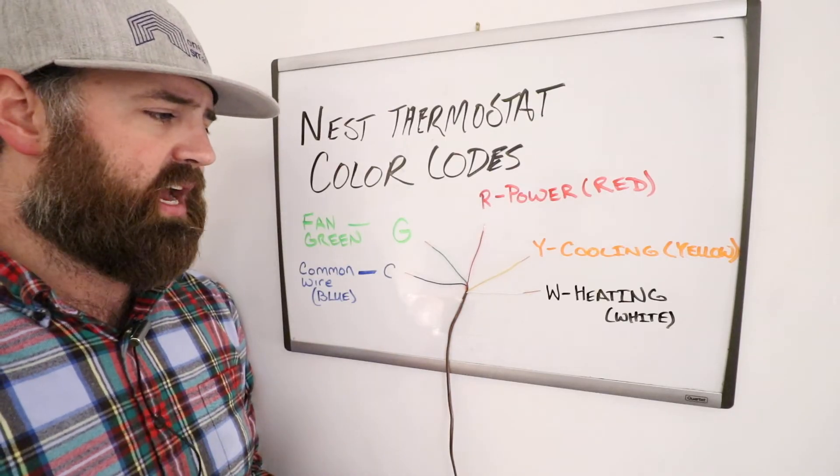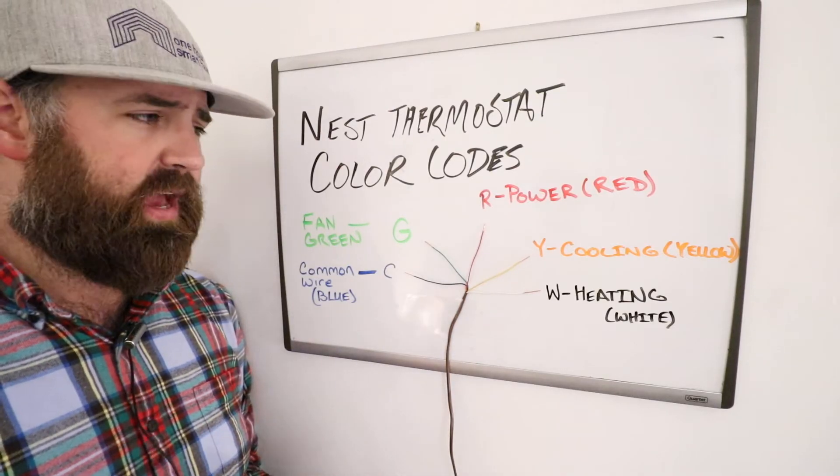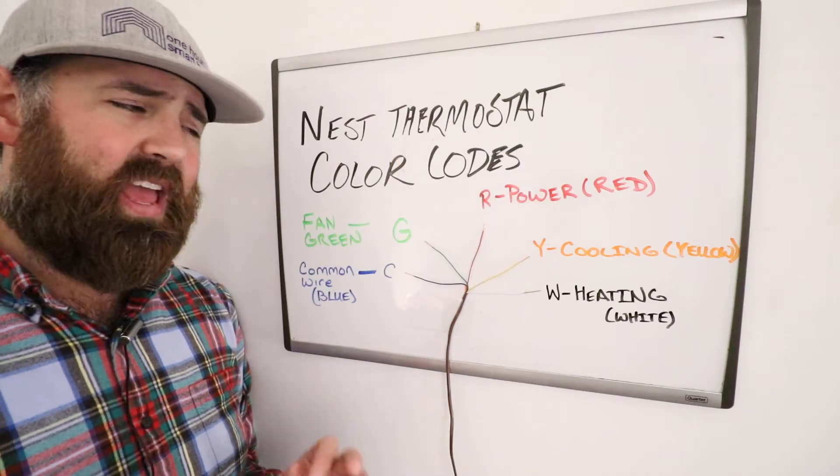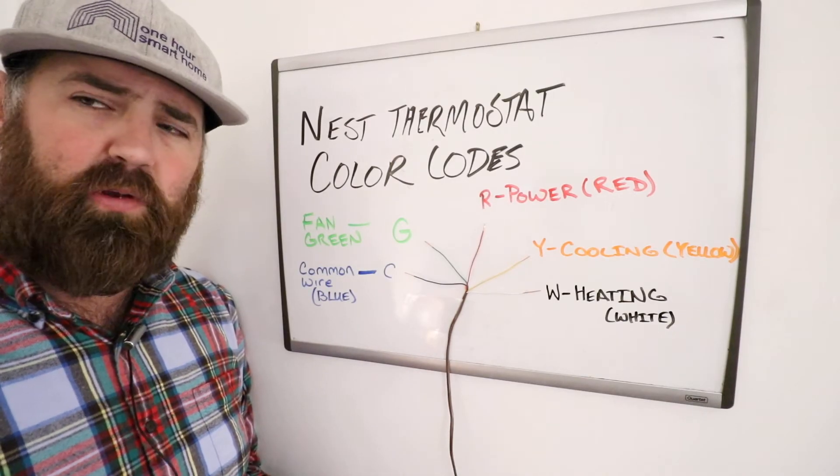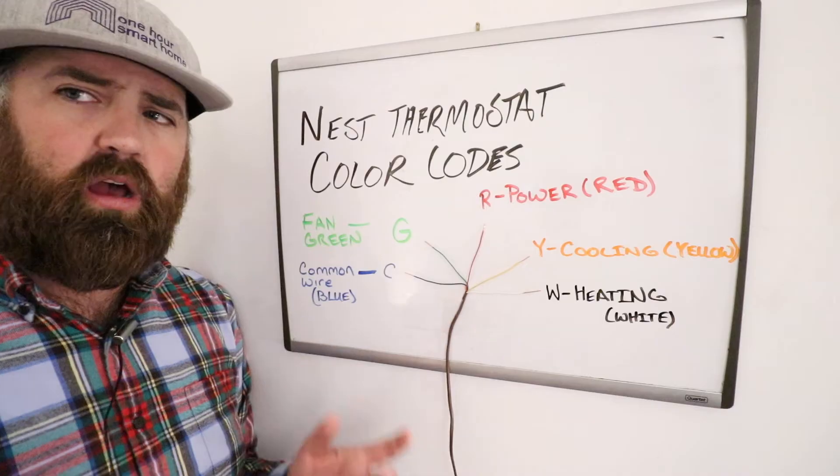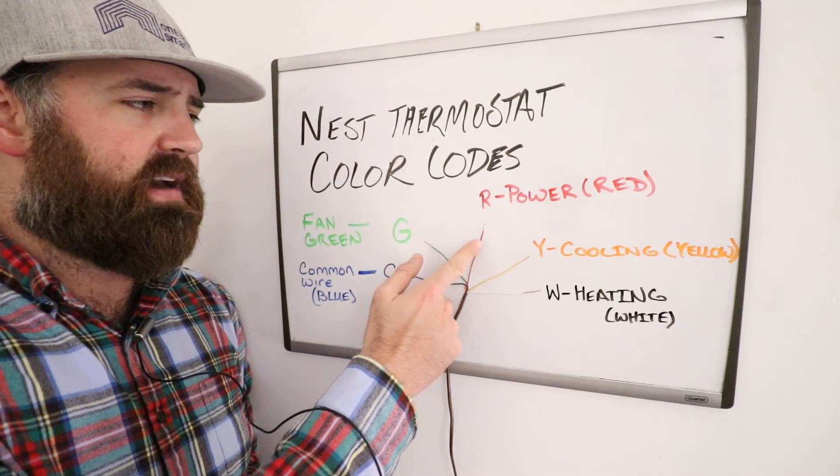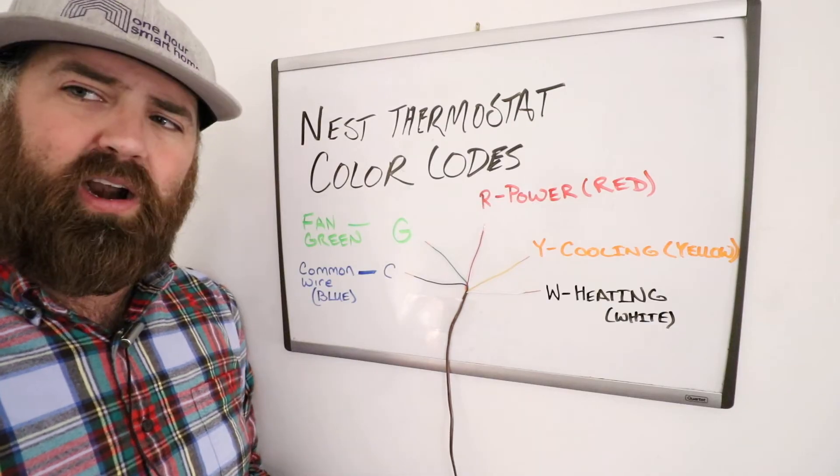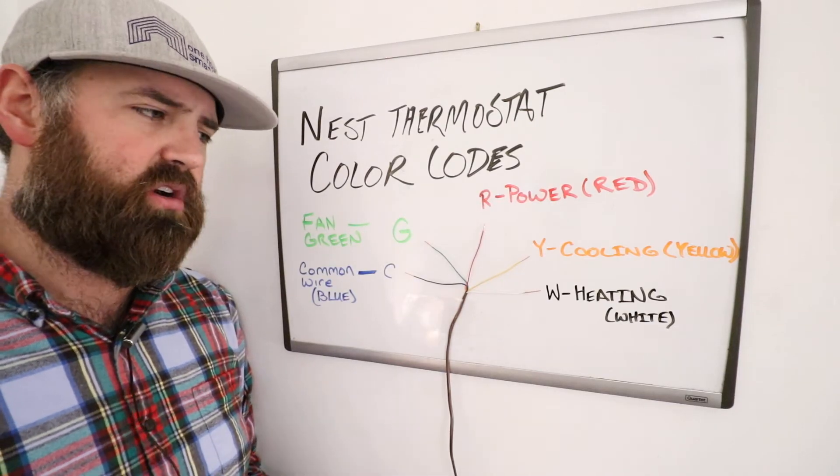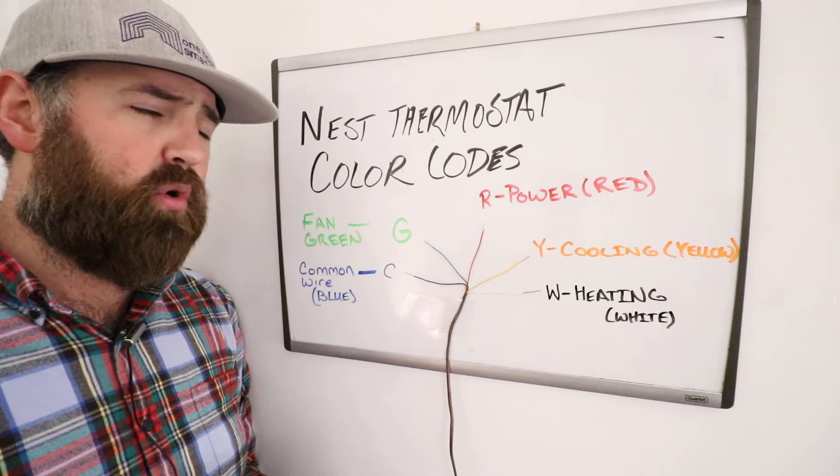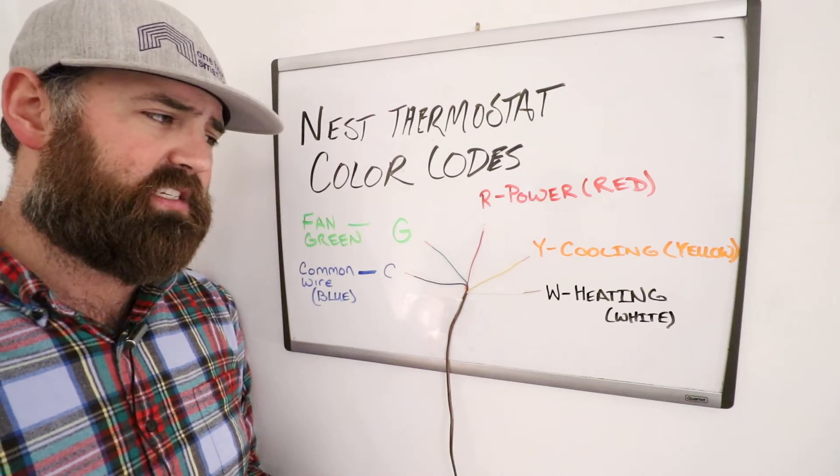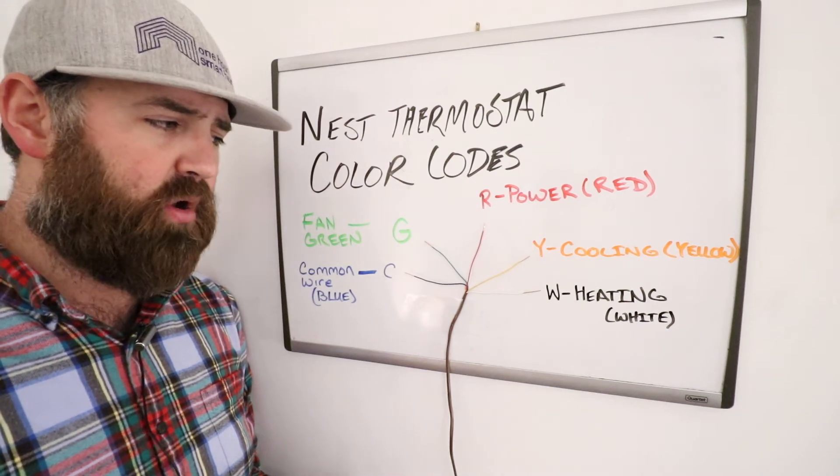Now let's say you only had two wires, which some of you do only have two wires, and typically that is a furnace-only system. Maybe you live somewhere where it doesn't get hot enough that you need air conditioning. In that case, you would really only need to have an R-wire, the power wire, and the W-wire, and that would activate your furnace and turn on your furnace. Or if you had a boiler, same thing for the Nest boiler and heating mode only.